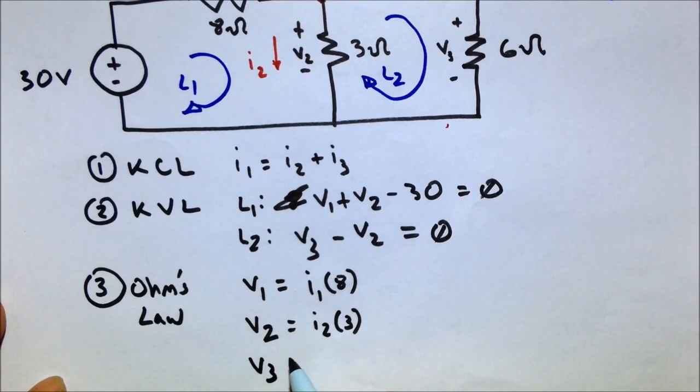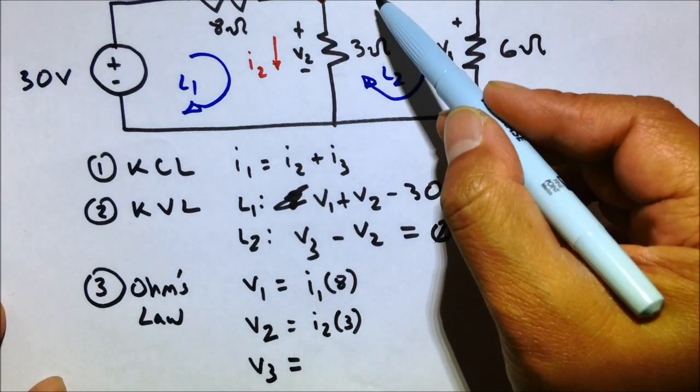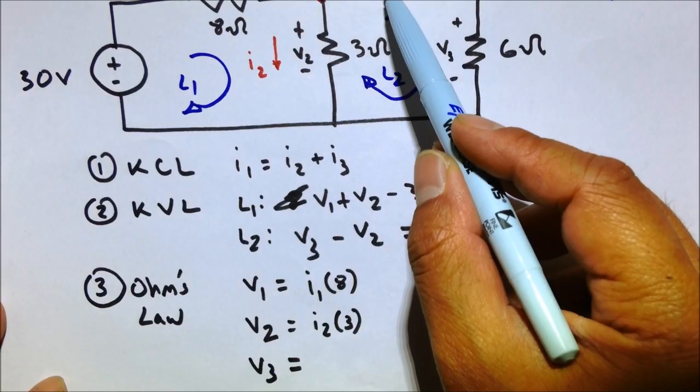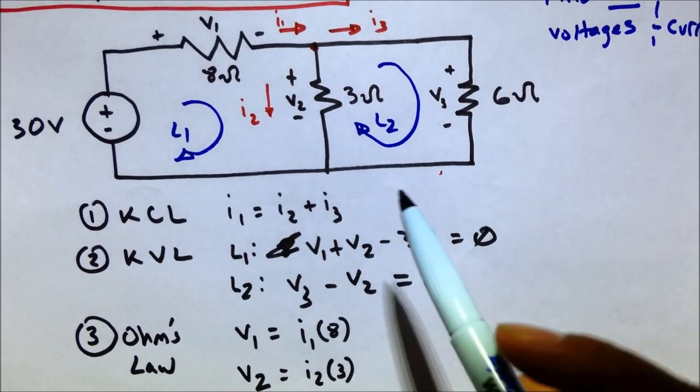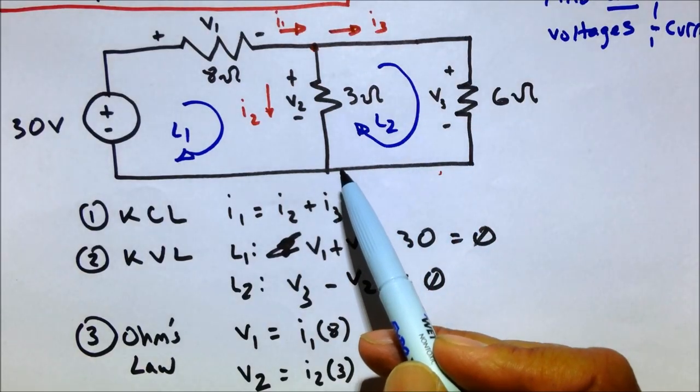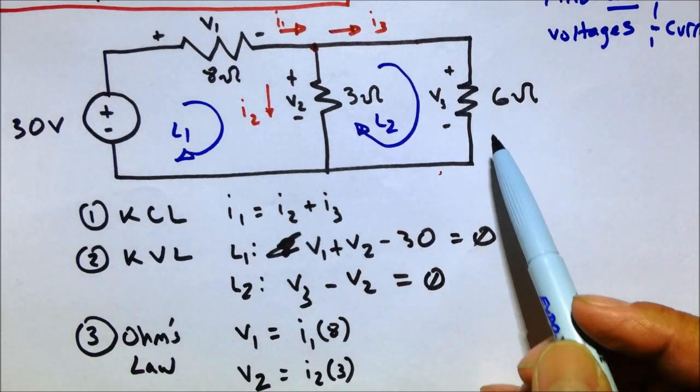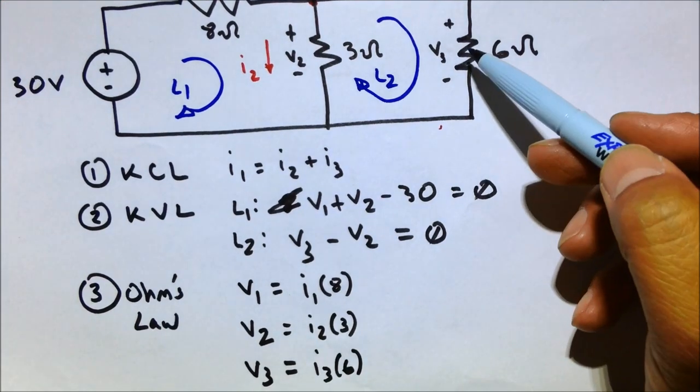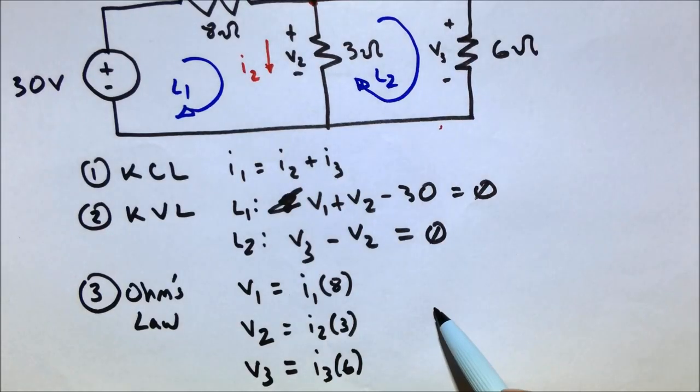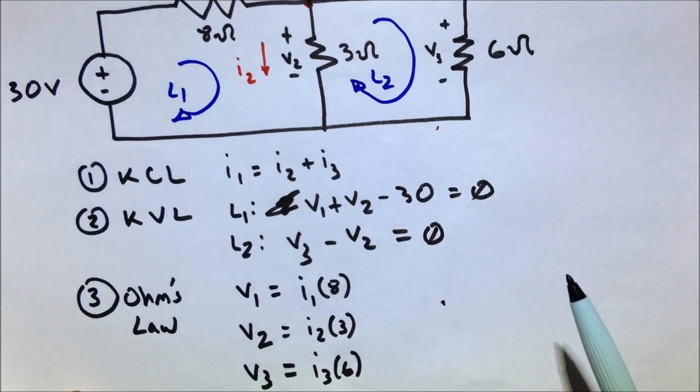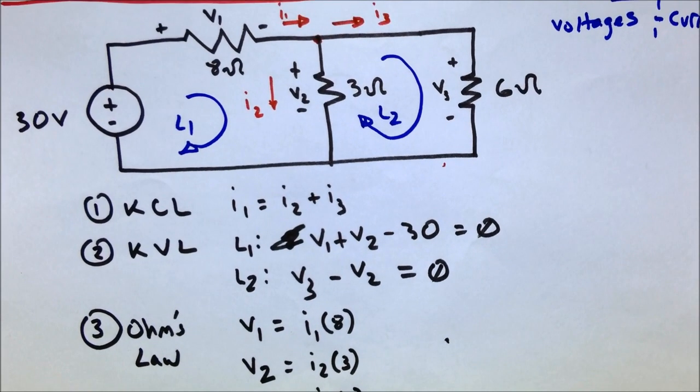And then we have one more relationship we can write about that maybe you cannot see. There you go. V3 equals I, and we defined this I that's going through this resistor as I3, way up there from earlier in the video. So I3, that's the current going through here, so I3 times this resistance, 6. So I3 times 6 equals that voltage drop across there. Well that's better. Because now we have one, two, three, four, five, six equations and six variables that we can mathematically solve.